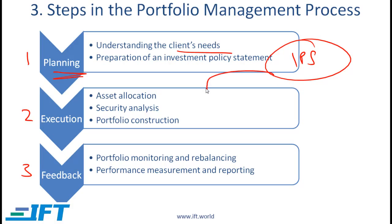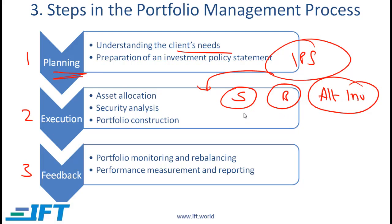Next comes execution, where based on the IPS we perform asset allocation — how the client's money is allocated across different asset classes. For example, stocks as one asset class, bonds as another, and alternative investments as a third. For a given client, we might say stocks represent 60%, bonds 30%, and 10% goes into alternative investments. After asset allocation, we then do security selection — identifying the specific securities to be purchased — and then construct the portfolio by actually purchasing those securities.